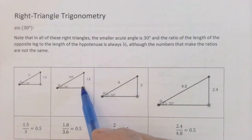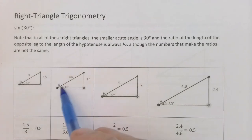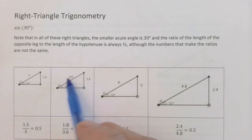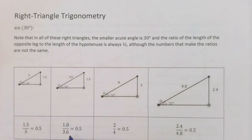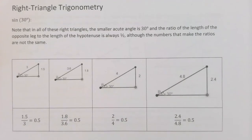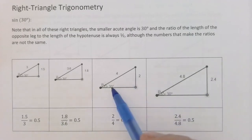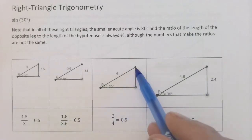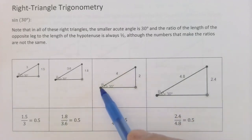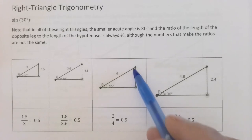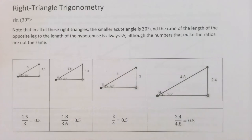This right triangle has larger measurements — the opposite leg is bigger, the hypotenuse is bigger — and yet when you divide those and form a quotient it comes out to be 0.5. Here are two more examples where you can see the very same thing going on. Here's the 30-degree angle, here's the opposite leg — the opposite leg divided by the hypotenuse is 2 divided by 4, which is 0.5.